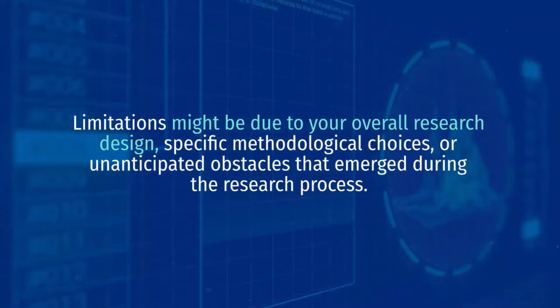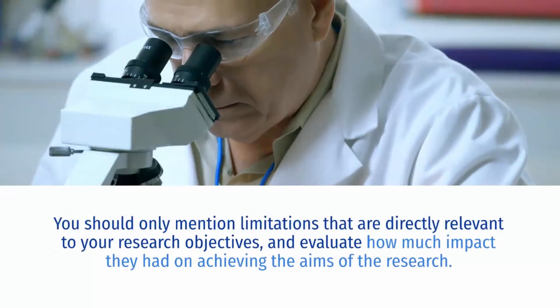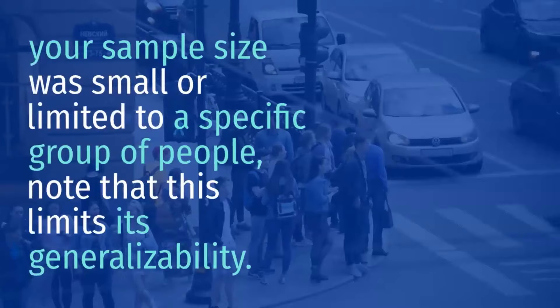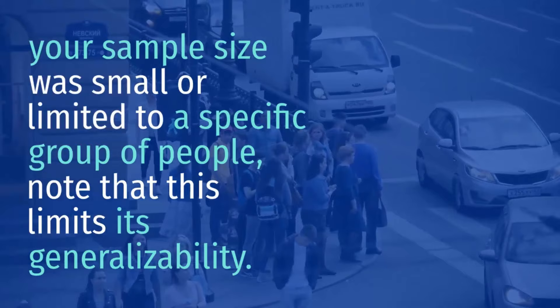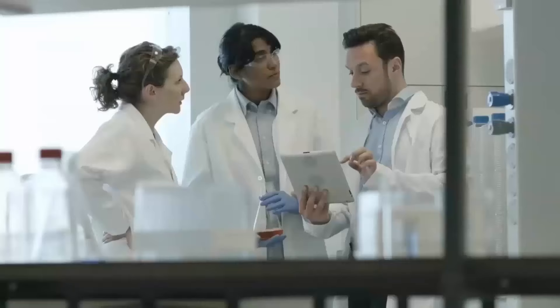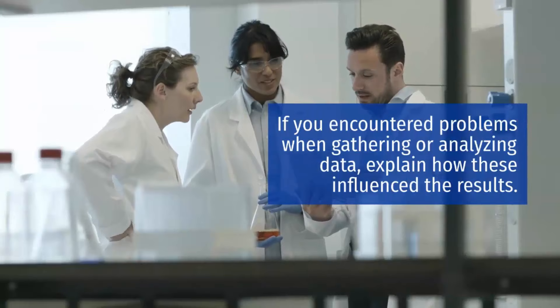You should only mention limitations that are directly relevant to your research objectives and evaluate how much impact they had on achieving the aims of the research. For example, if your sample size was small or limited to a specific group of people, note that this limits its generalizability. If you encountered problems when gathering or analyzing data, explain how these influence the results.